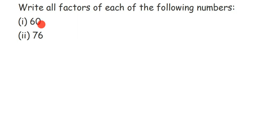Since 60 and 76 are two-digit numbers, we can check from 1 to 10. If the number is a three-digit number or greater, we'd have to use trial and error to get the answer. Since 60 is a smaller number, I'm going to check from 1 to 10 and get all the factors that way.